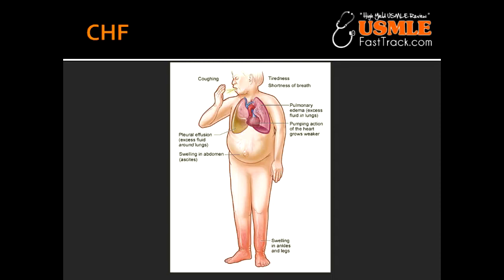What is cor pulmonale? Cor pulmonale is a condition where there is an enlargement of the right ventricles of the heart, and this happens due to disease of the lungs or disease of the pulmonary blood vessels.